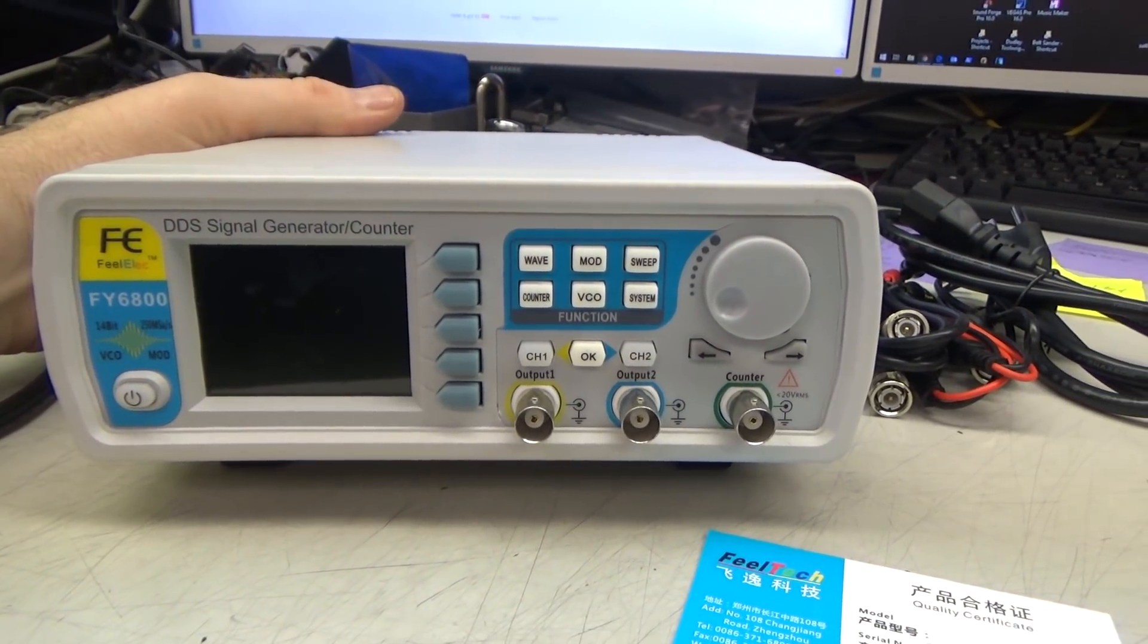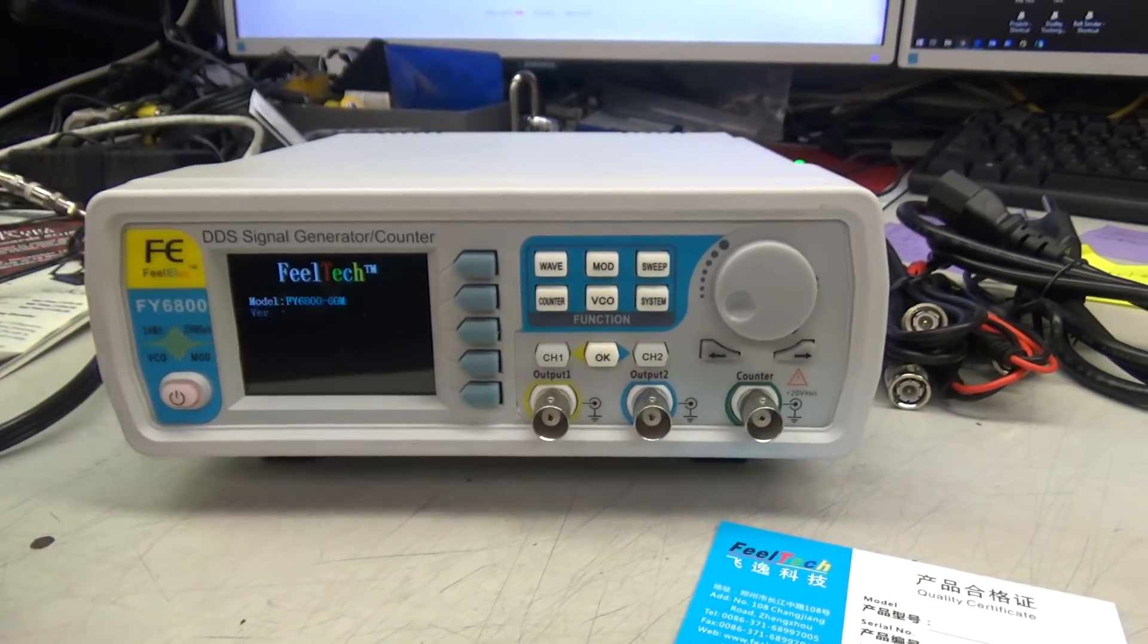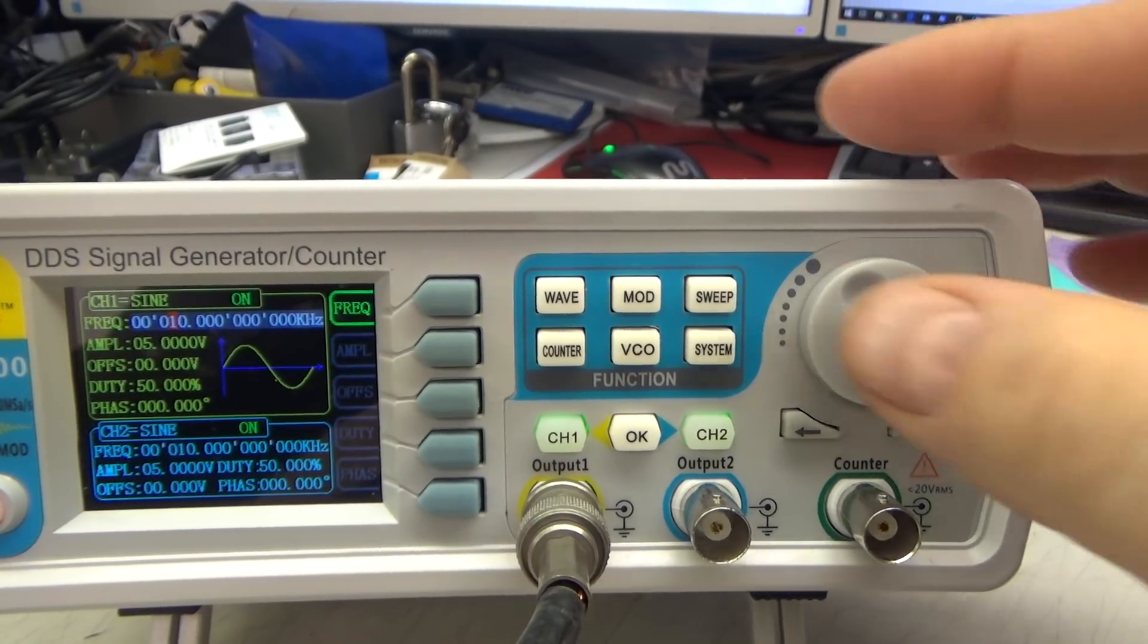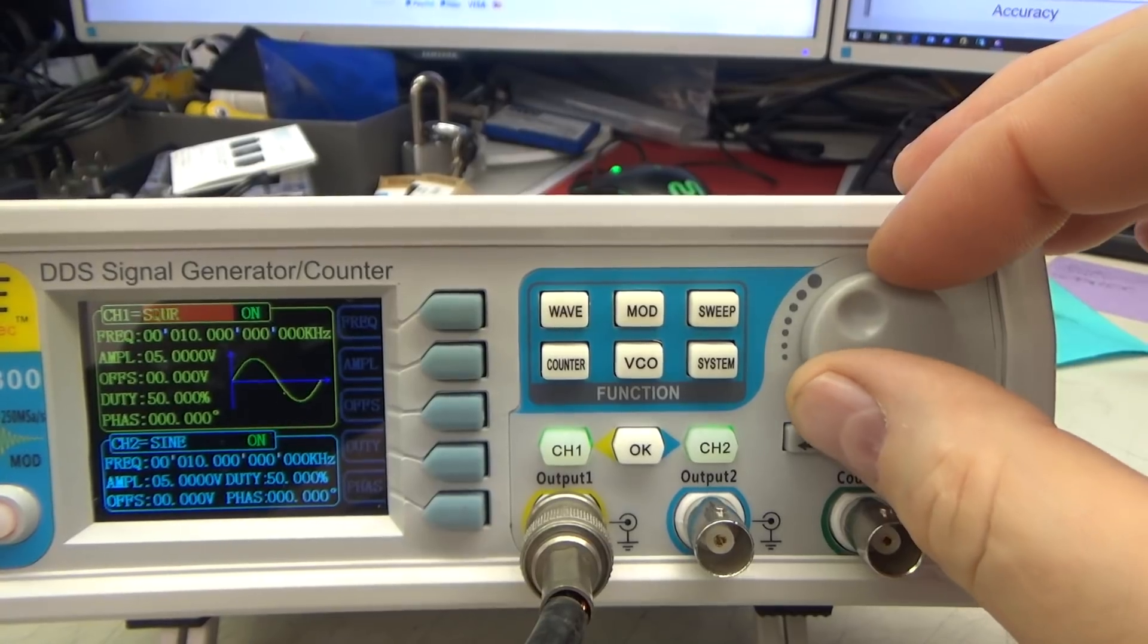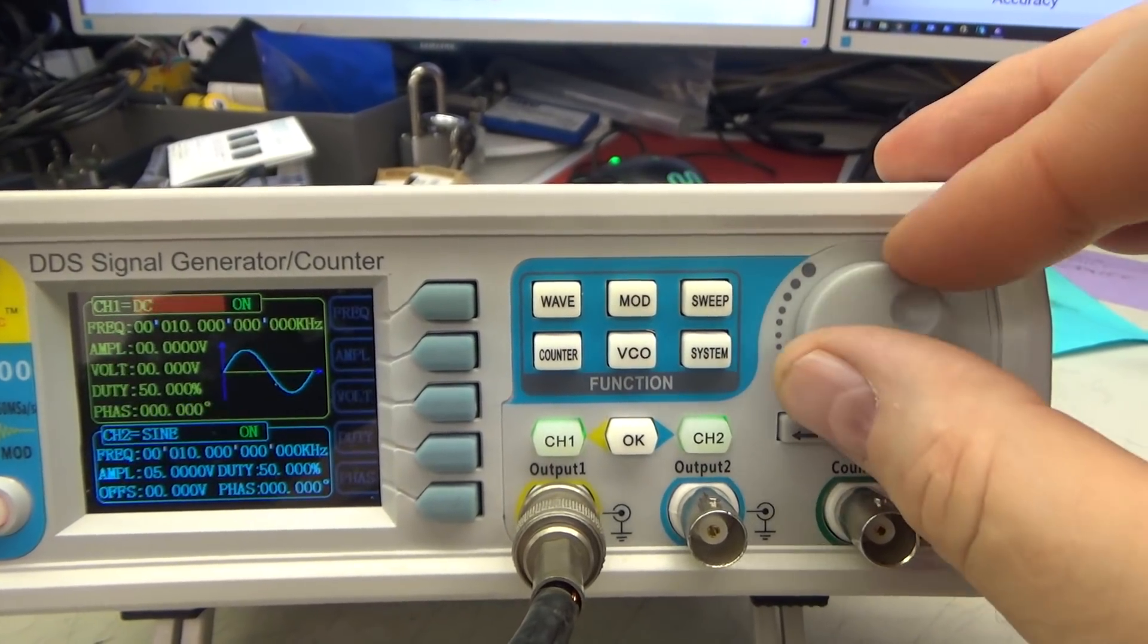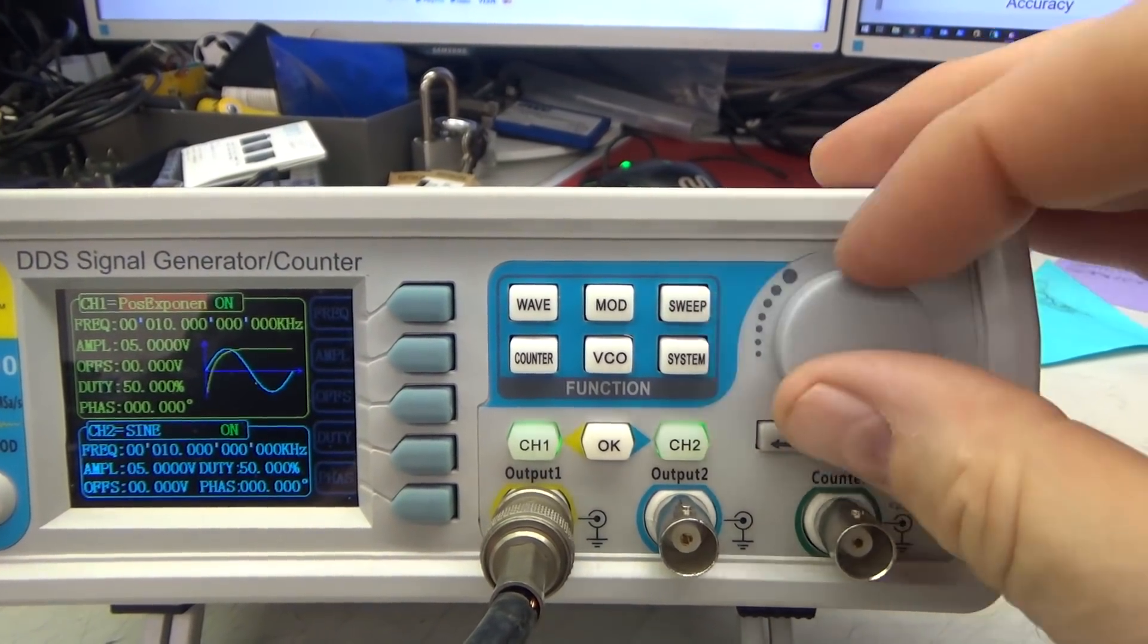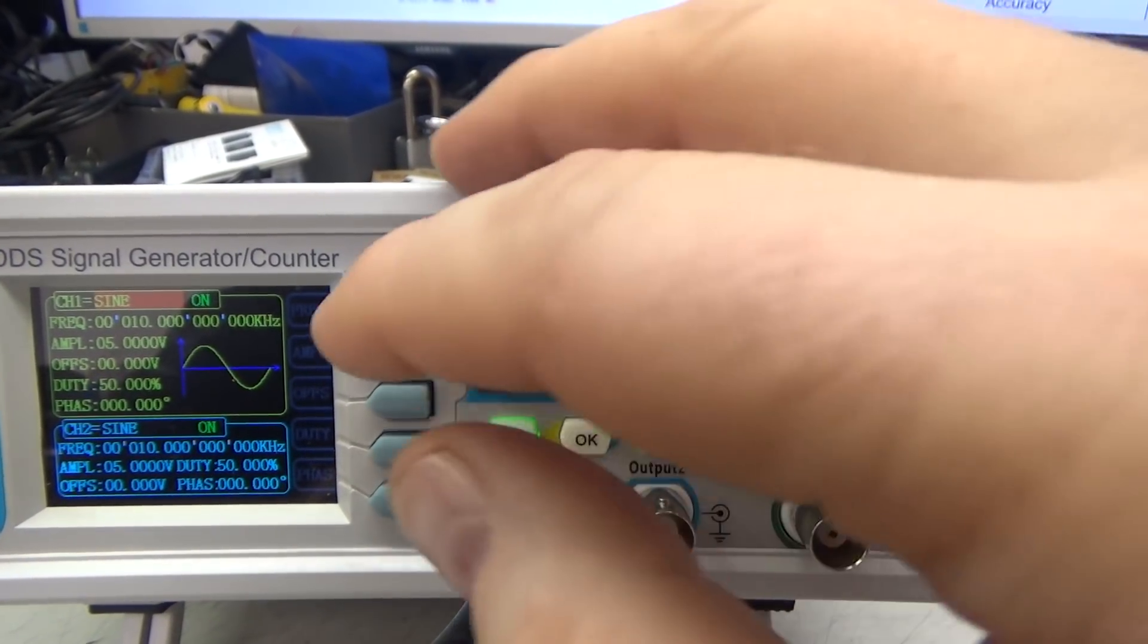There is a hardware power switch on the back so here's powering up the unit for the first time. Looks like it ignores the soft power on the front and comes up powered on. Starting with simple functions you have in the waveform menu it lets you change what the output waveform is going to be of which there are a boatload of pre-built waveforms in the system and they show you a sample of what it looks like on the LCD screen. Let's go back to sine wave here.